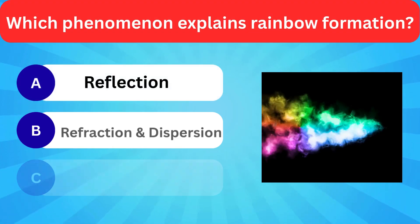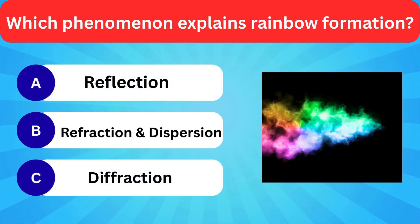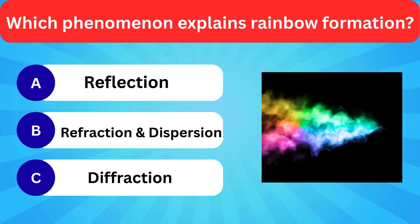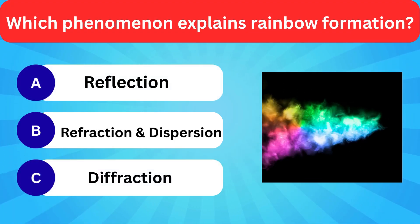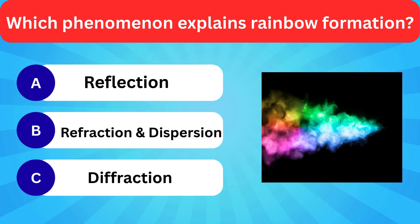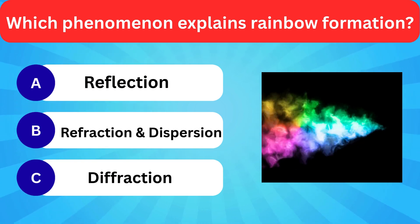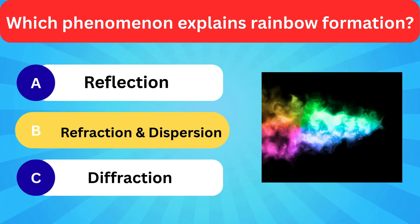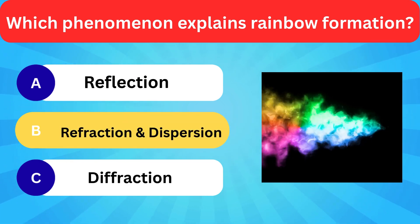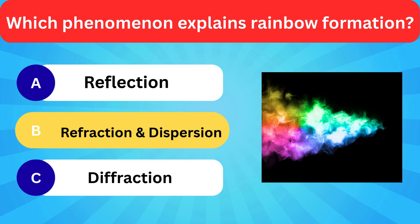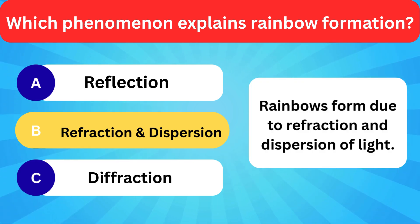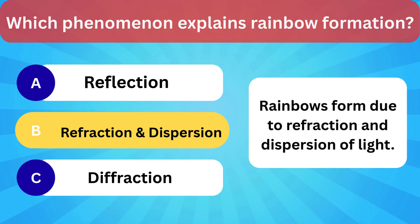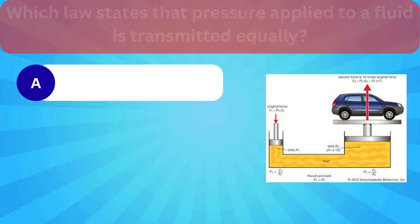Which phenomenon explains rainbow formation? Options: Reflection, Refraction and dispersion, Diffraction. Correct answer is refraction and dispersion. Rainbows form due to refraction and dispersion of light.